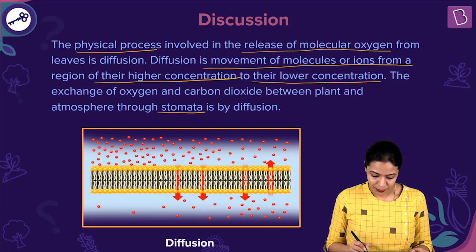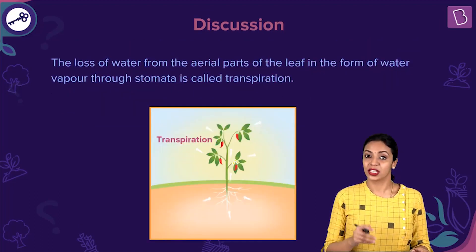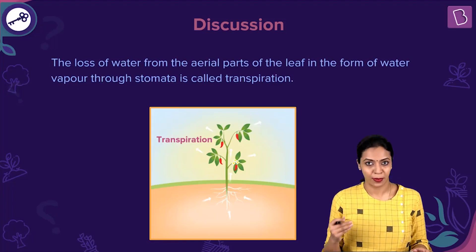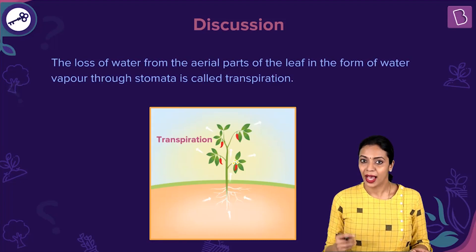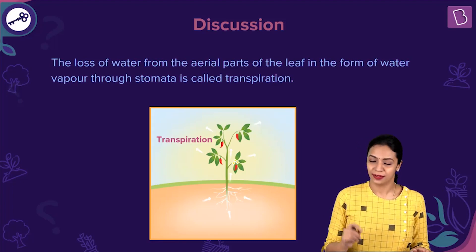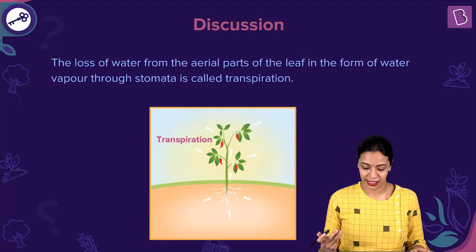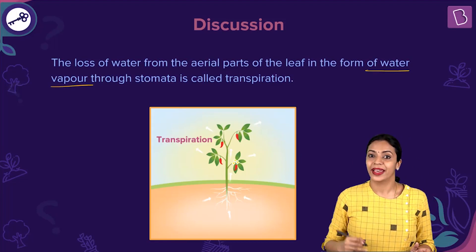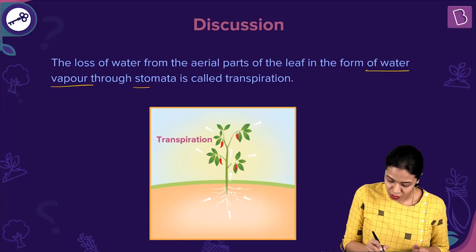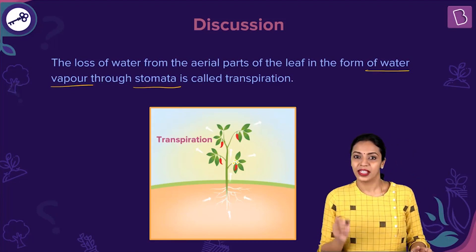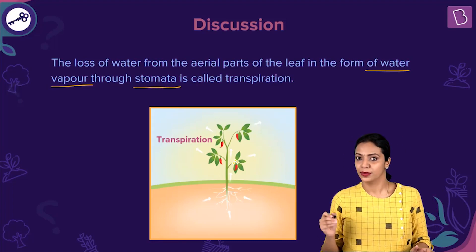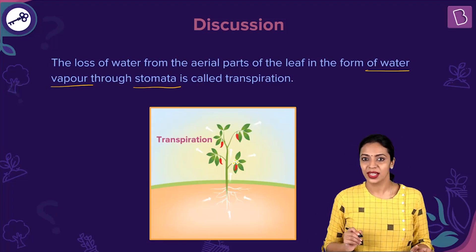The other option was transpiration. What do we mean by transpiration? Transpiration is a process in which water is lost from the plant. This water loss happens in the form of water vapor — water is lost in its gaseous form through the aerial parts of the plant, especially the stomata. This is known as transpiration: loss of water in the form of vapor from the aerial parts of the plant, usually through the stomata.